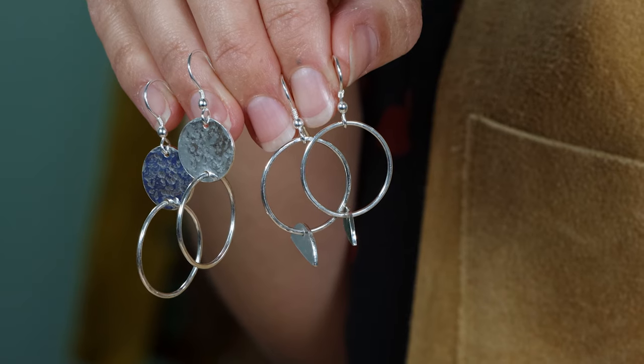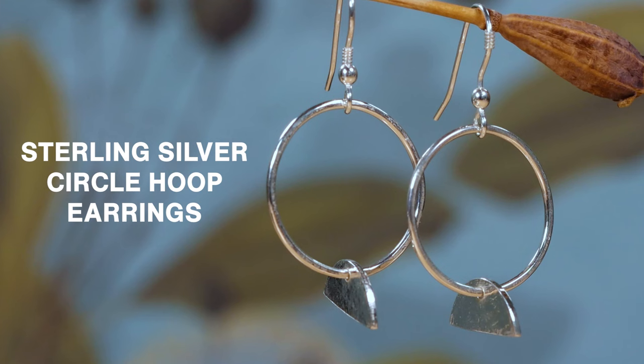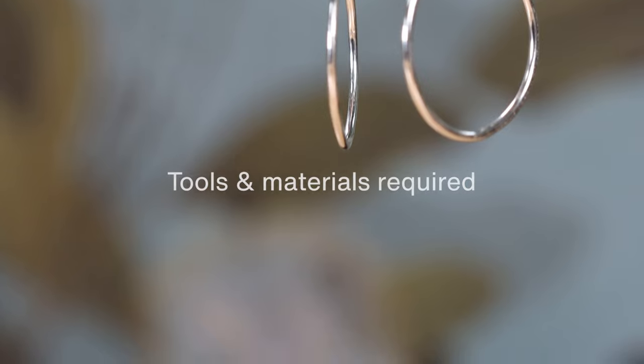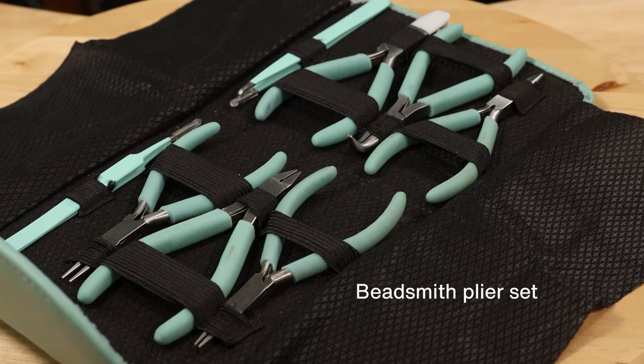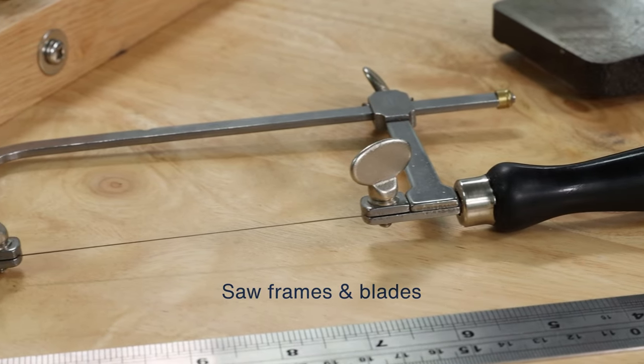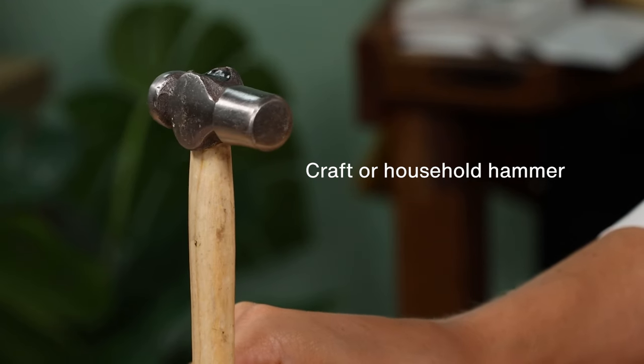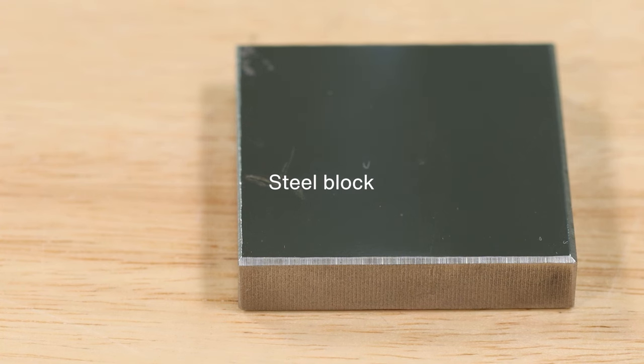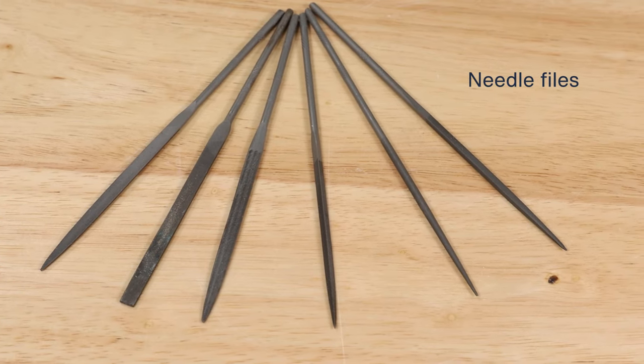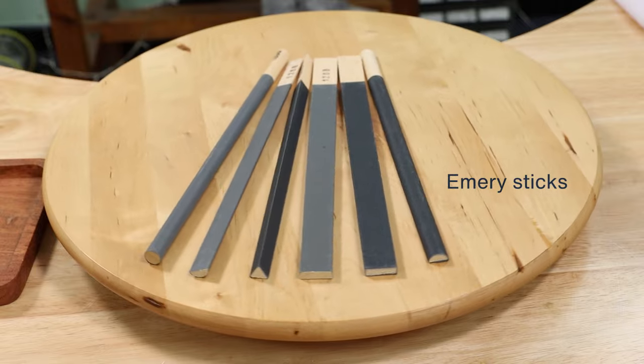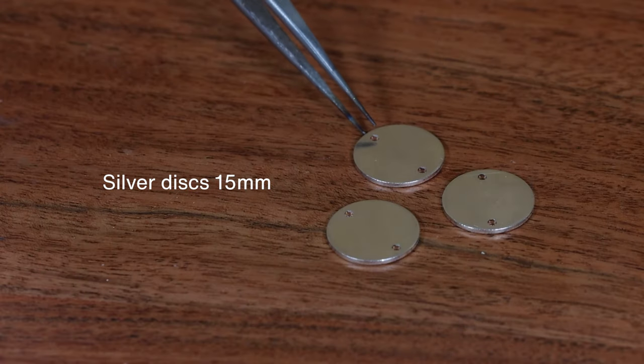Let's make these sterling silver hammered hoop earrings. All of these materials can be bought as a project kit by clicking on the link in the description.